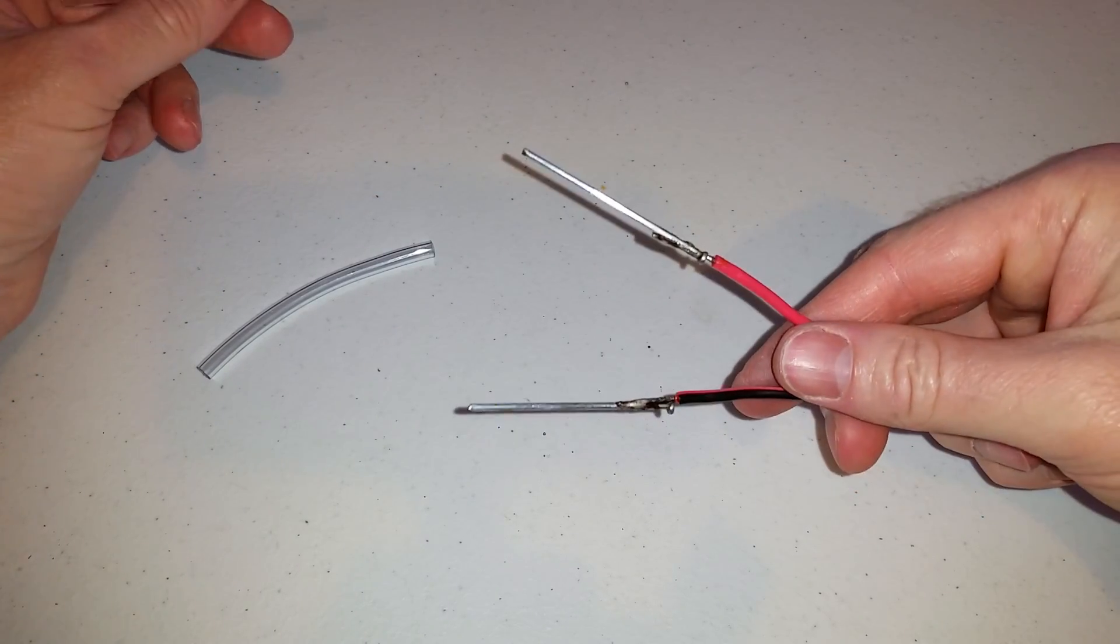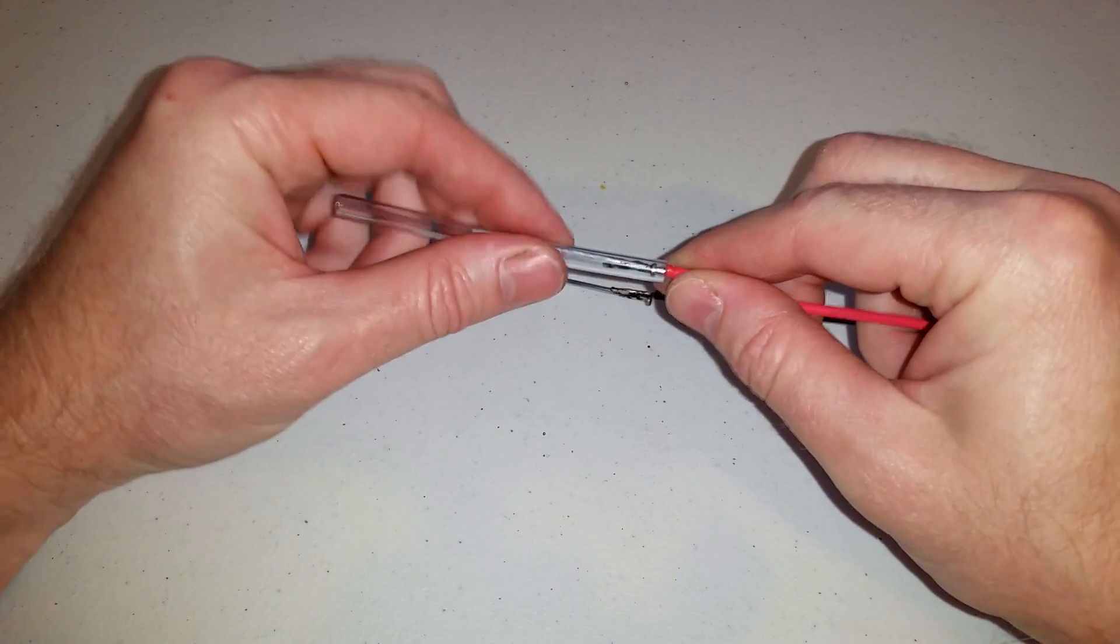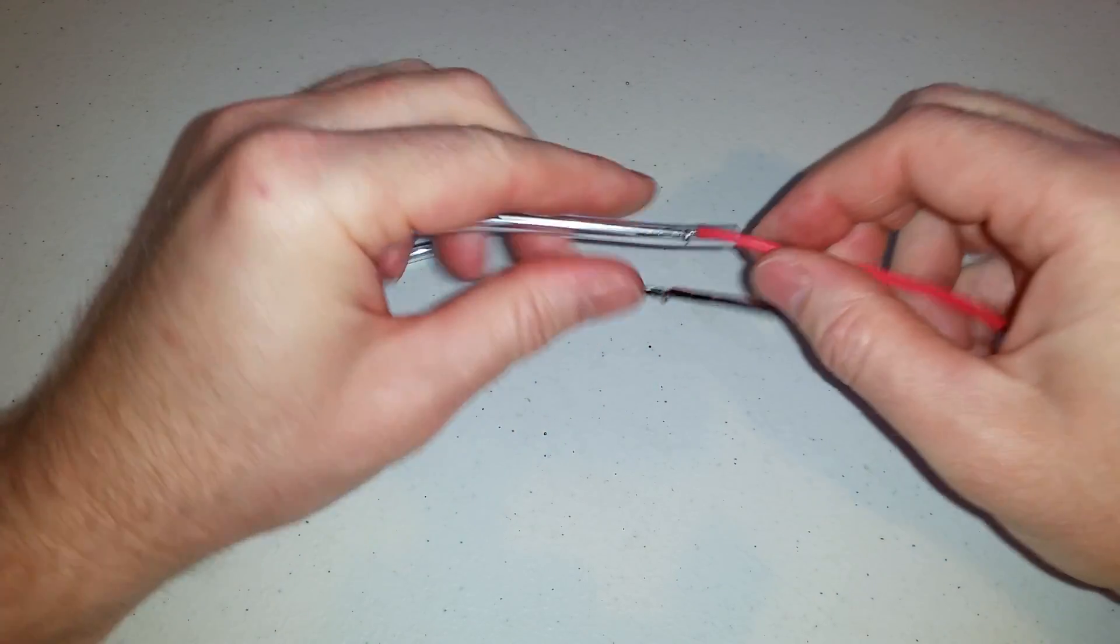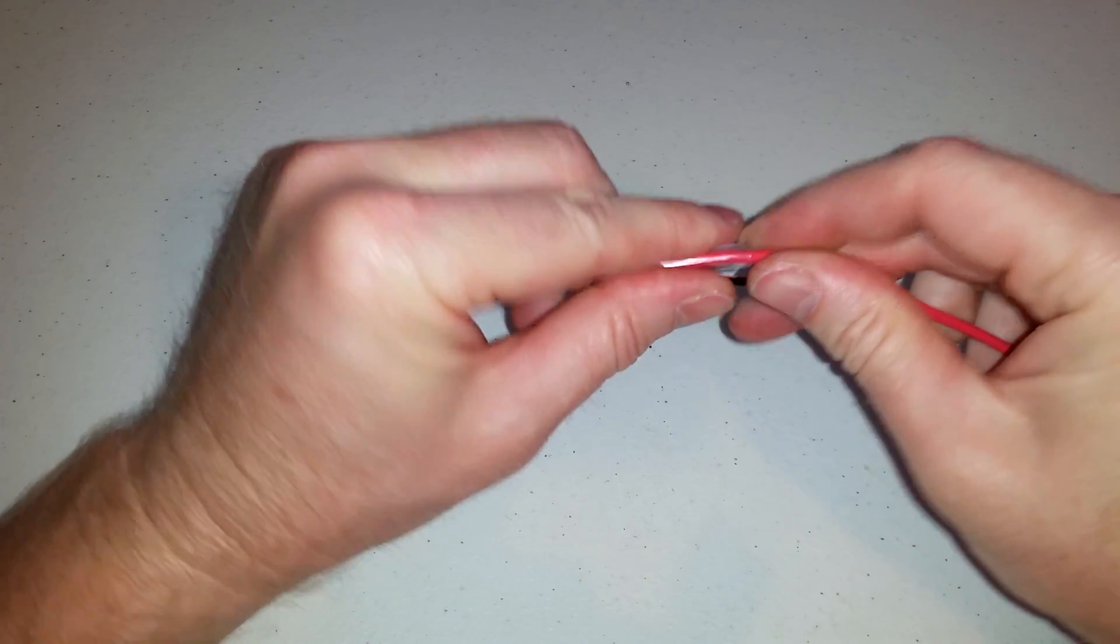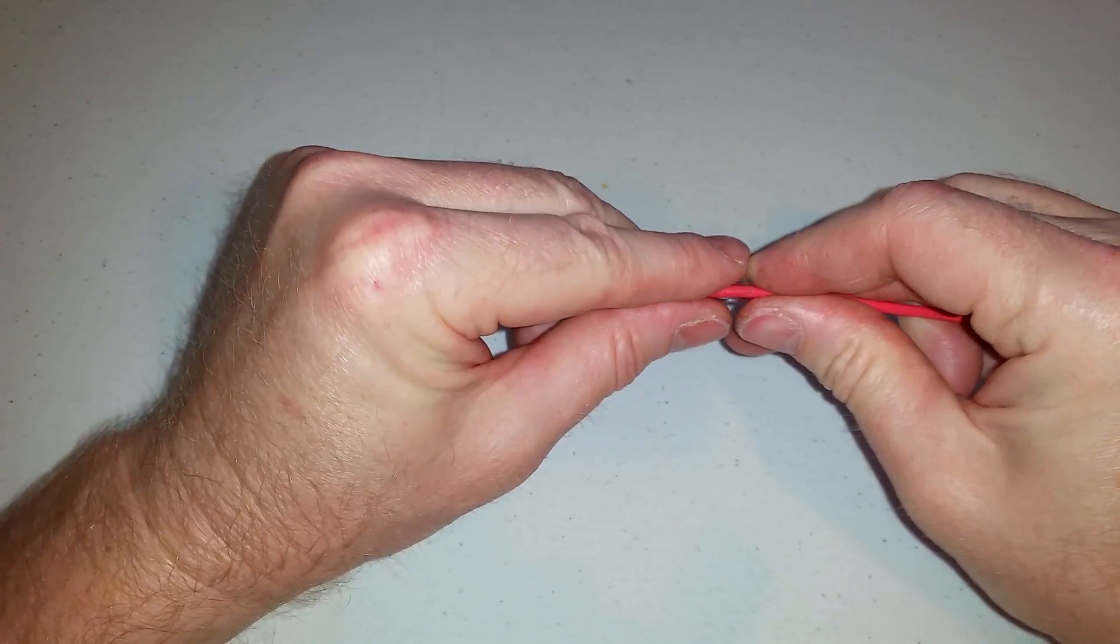Now that I have both of my nails soldered onto the wire, I can take the airline tubing and push it over the nail and the wire.